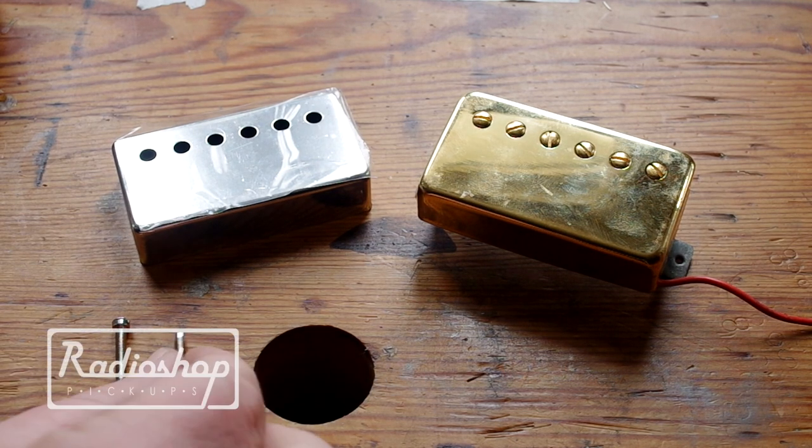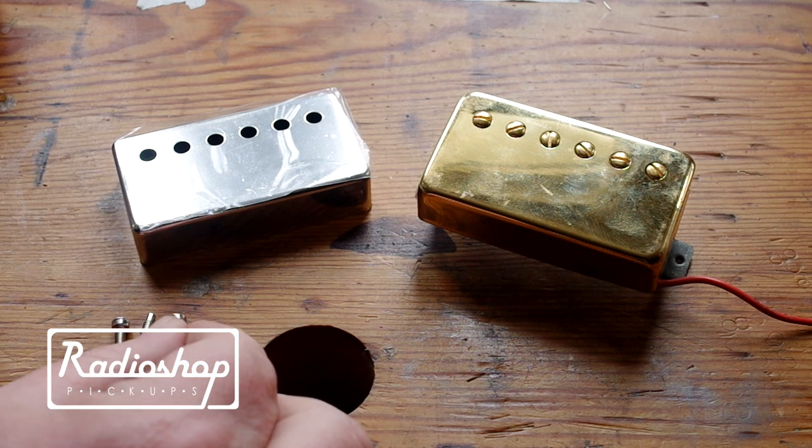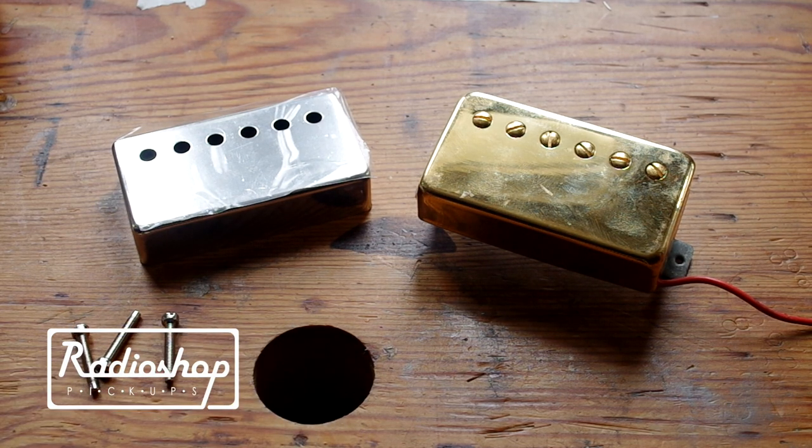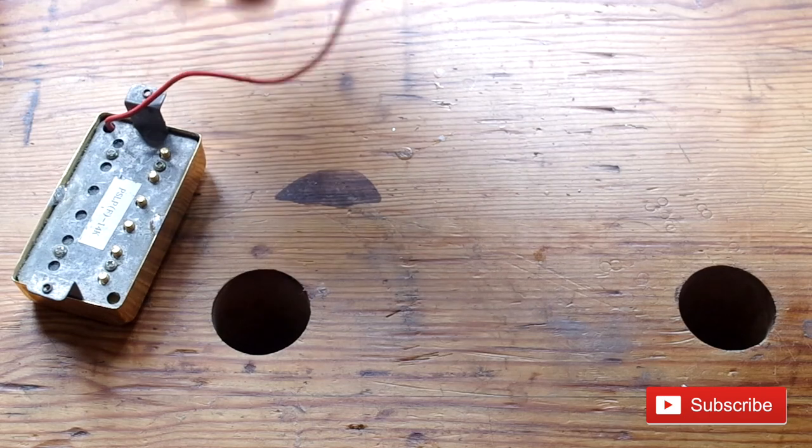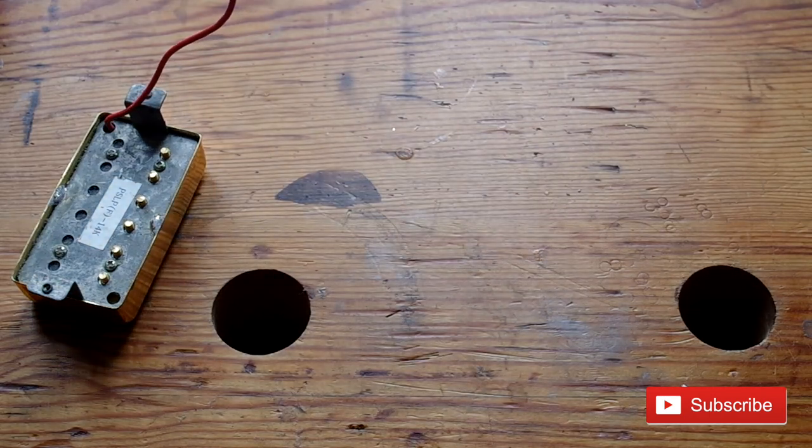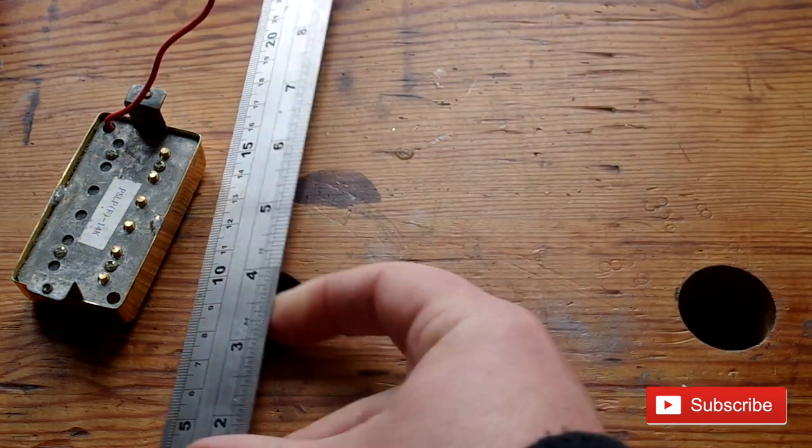So I'm going to use a dummy pickup on the right there, the gold one we had lying around. We're going to put a nice new cover on which is going to be nickel. For the purpose of this video I'm actually going to change the pole pieces, give it a totally new look as well. Let's have a look at what you'll need.